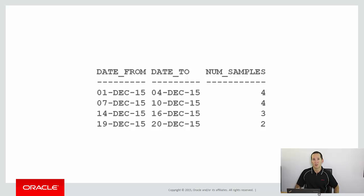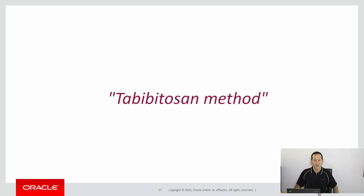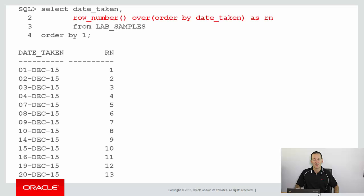Let's use our knowledge of analytics to build that up. This is the desired result — you can see we went from the 1st to the 4th for four consecutive days, 7th to the 10th for four consecutive days, and so on. We're going to use something called the Tabiteau-Bitterand method, which is a way of grouping data. Let's build it up and see how we go.